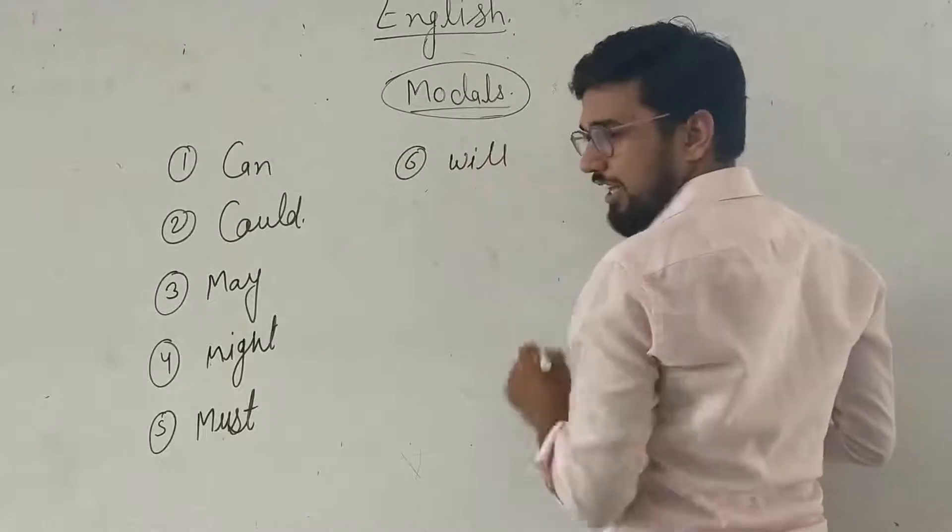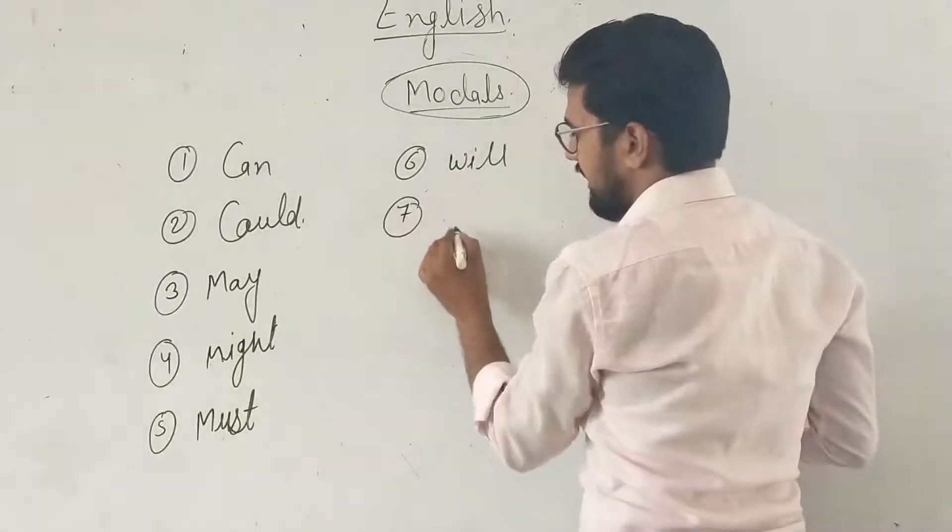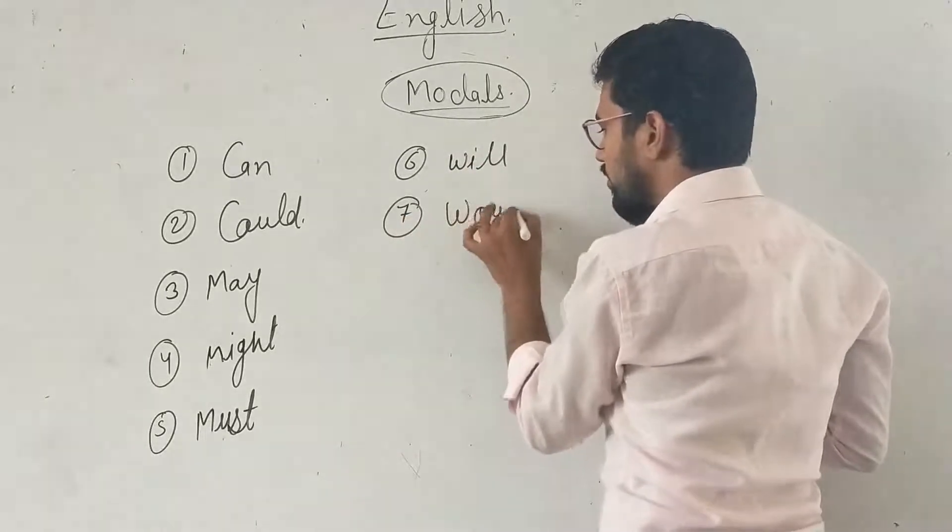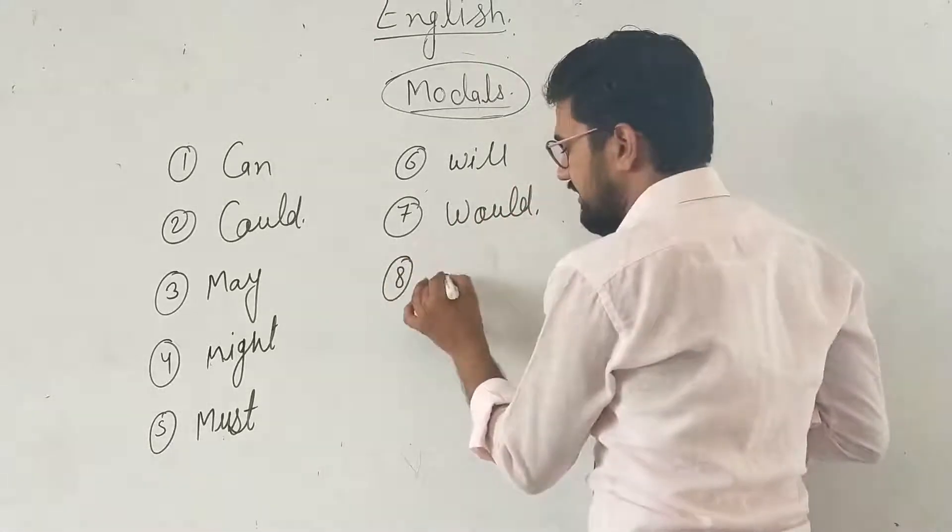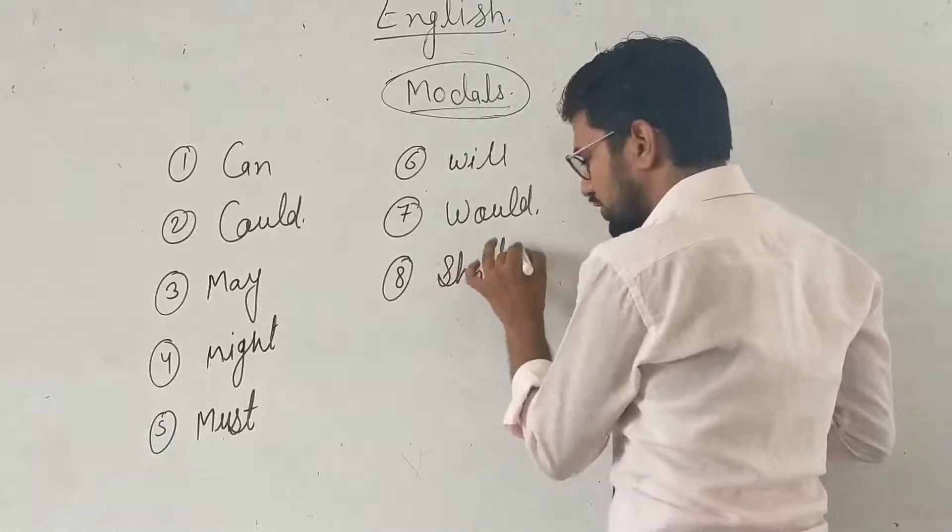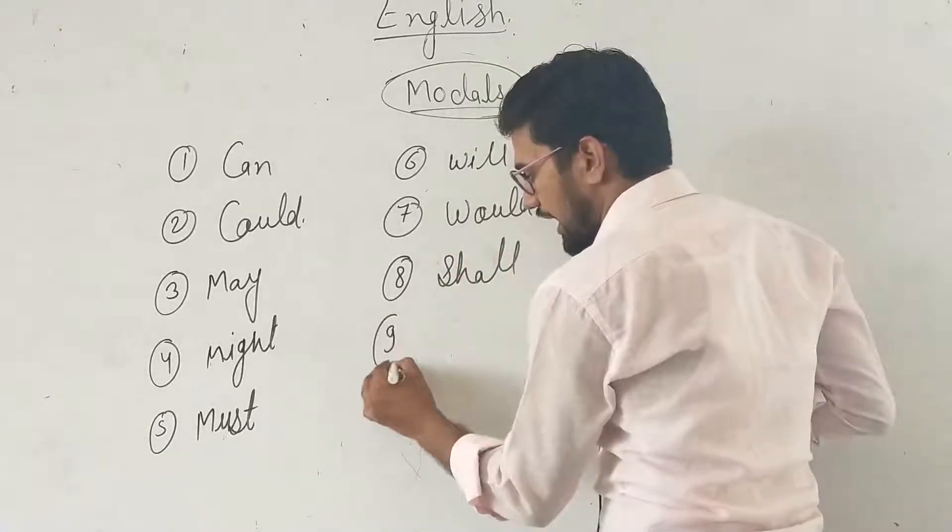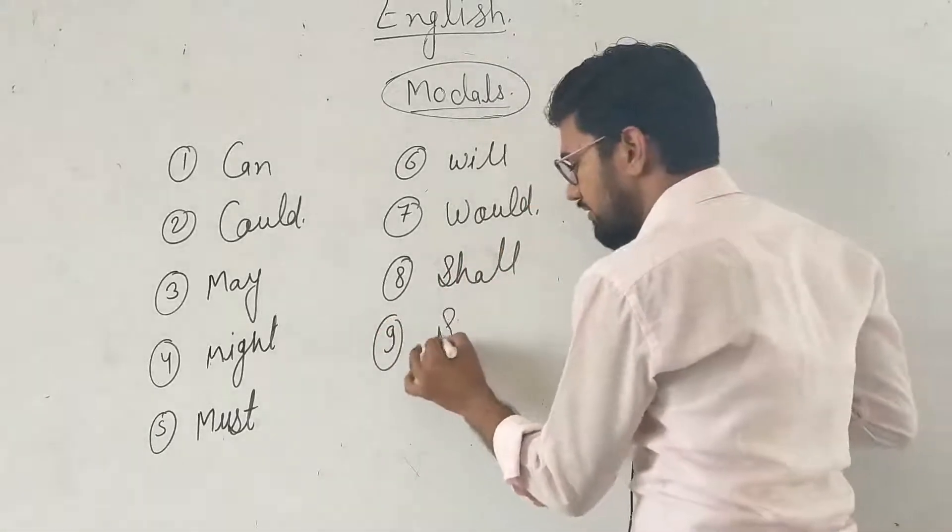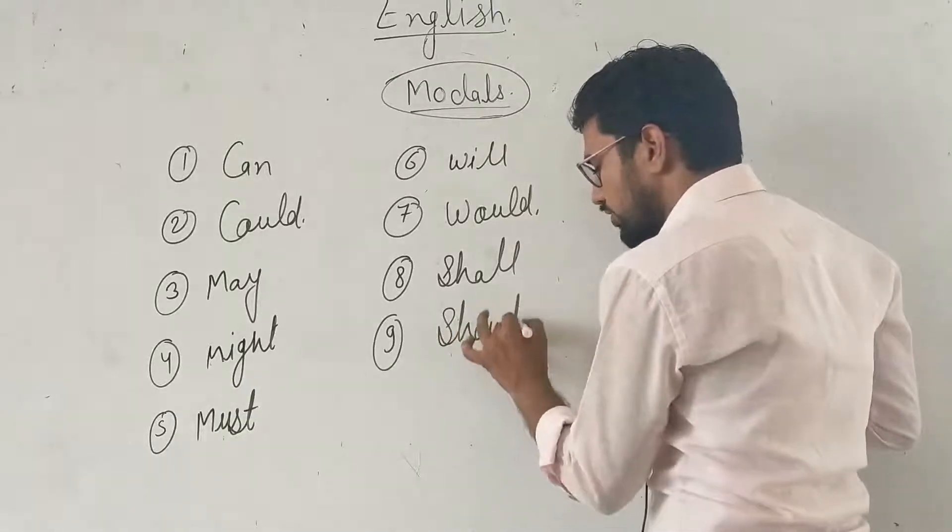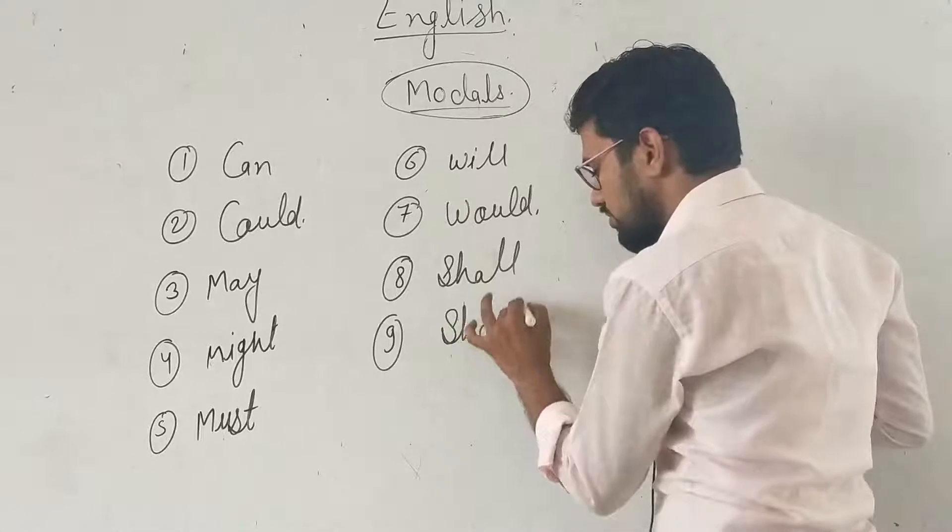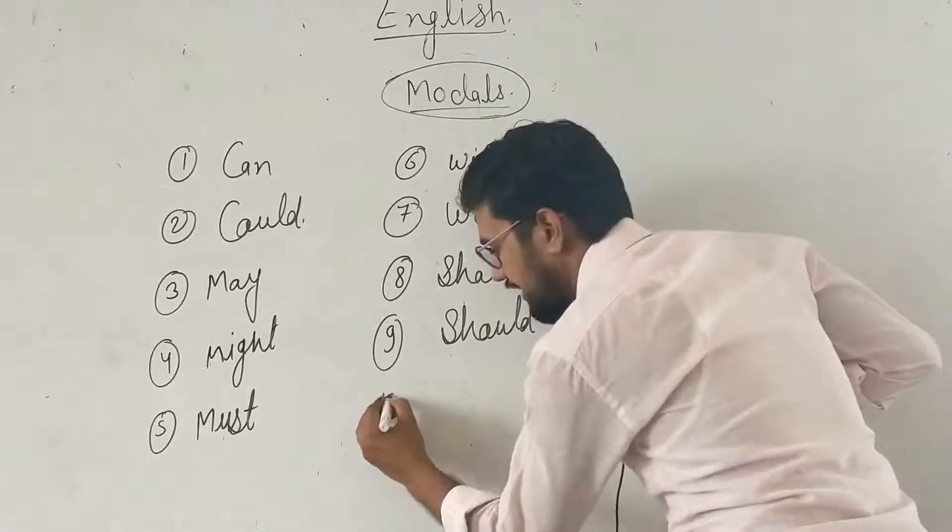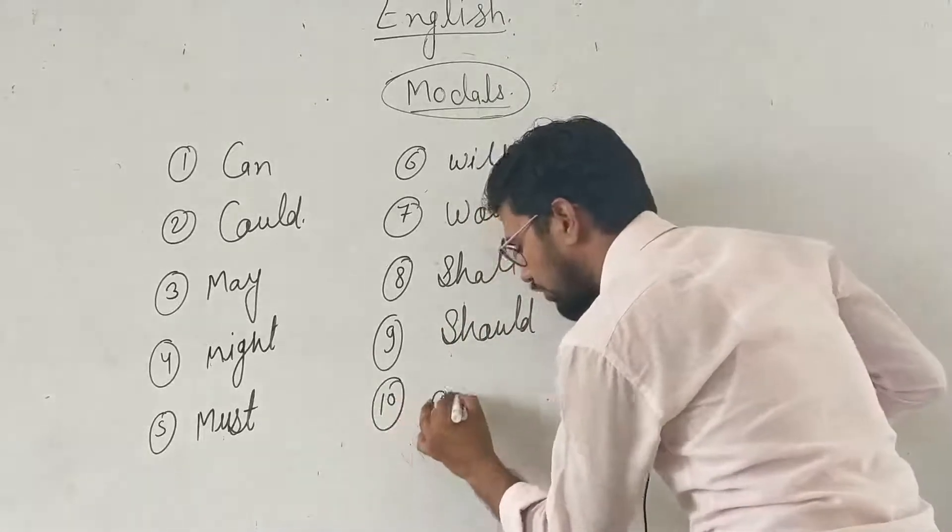Third one is may and with the same, might. May and might. Fifth one is must. Sixth one is will. Next one is shall, and with the same should.